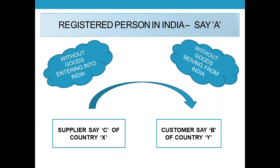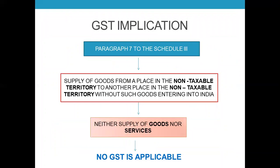Now, let us try to understand the GST implication on Third Country Shipment or Triangular Trade. Paragraph 7 of Schedule 3 to CGST Act provides that supply of goods from a place in the non-taxable territory to another place in a non-taxable territory without such goods entering into India — that is, third country shipments — is treated as neither supply of goods nor supply of services. Thus, there is no GST liability on such sale.